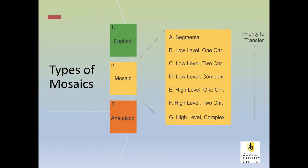Here are the various types of mosaic embryos. You may have a segmental mosaic embryo where there's only one segment of a chromosome which is either extra or missing, and it's not the whole chromosome. An embryo can have one whole chromosome that's either missing or extra, or it could have two chromosomes extra or missing, or three or more, in which case we would call it complex — and it can be low-level or high-level.